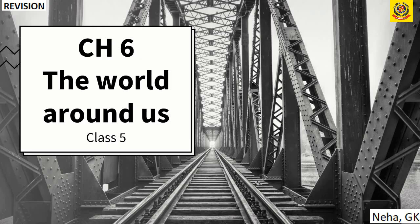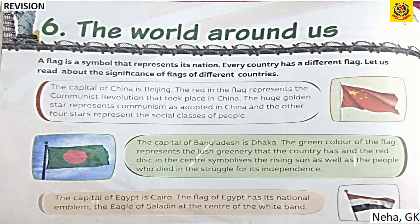Chapter 6: The World Around Us. The first part covers flags of different nations. A flag is a symbol that represents its nation, and every country has a different flag. Let us read about the significance of flags of different countries.